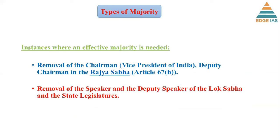Effective majority is needed for: removal of the Chairman of Rajya Sabha (that is the Vice President of India) and Deputy Chairman of Rajya Sabha; Speaker and Deputy Speaker of Lok Sabha; and the State Legislature. That is where effective majority is used.